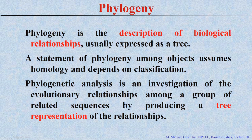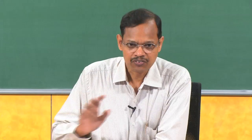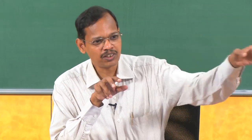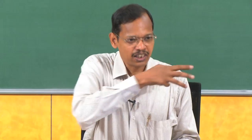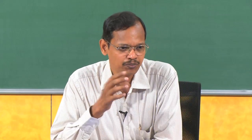Phylogenetic analysis is the investigation of the evolutionary relationship from one organism to different organisms among the group of related sequences, by giving a tree-like representation. We give a tree-like representation to understand the evolutionary relationship. There are various ways to explain the relationship, but this is the easiest way — for example, if you say A and B are related, B and C are related, A and D are related, the tree-wise representation is the easiest possible way to understand the relationship among different organisms.